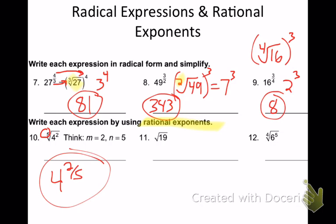Number 11 — there's no power and there's no root showing. Well, what's the invisible power that goes here? 1 — there's always an implied 1. And what's the invisible root? If it's a square root, the invisible root is 2. So that's like saying 19 to the 1 half power.